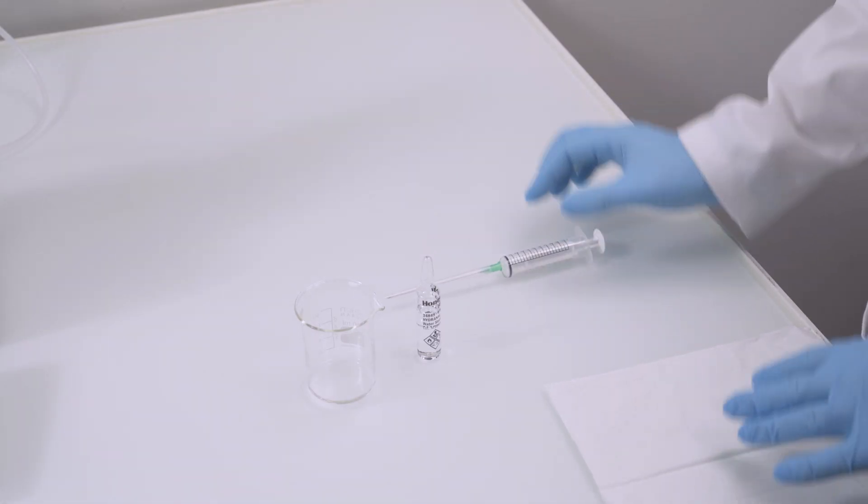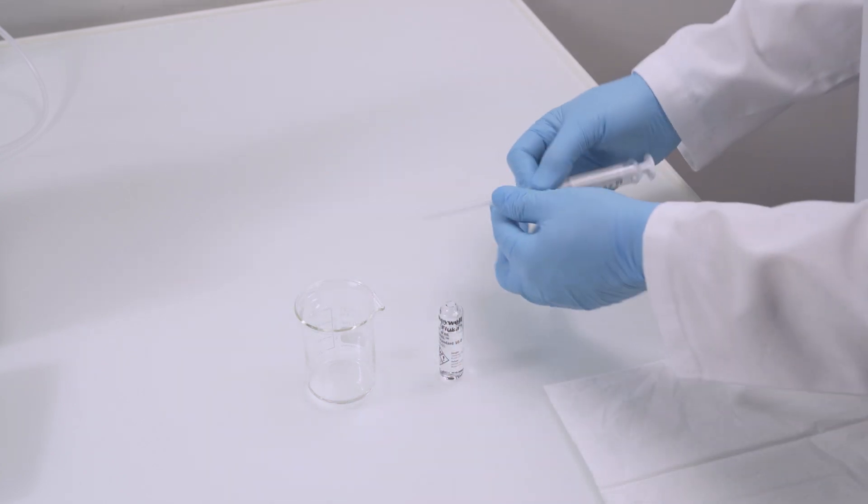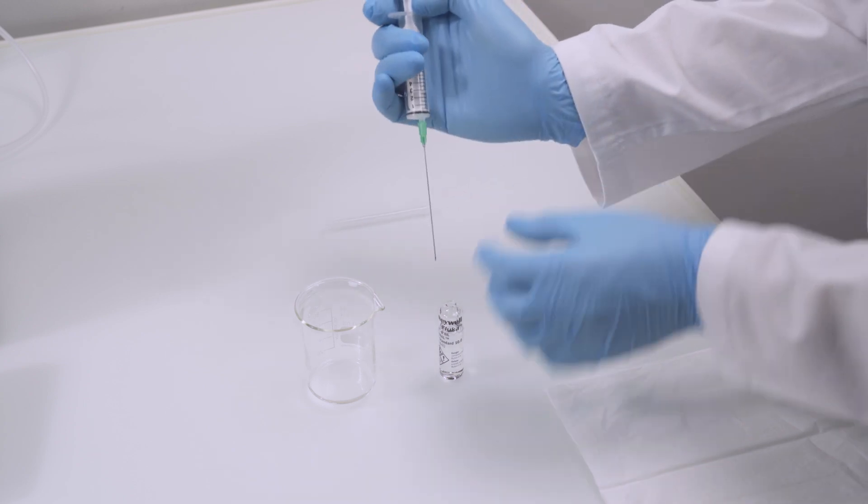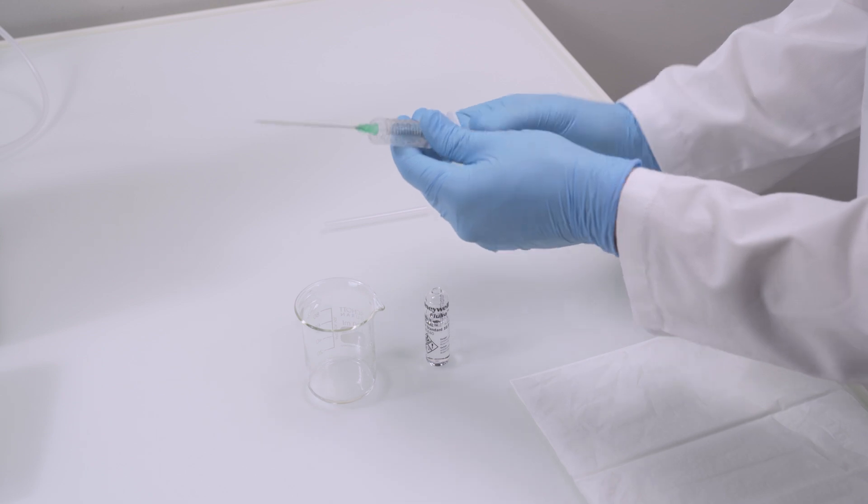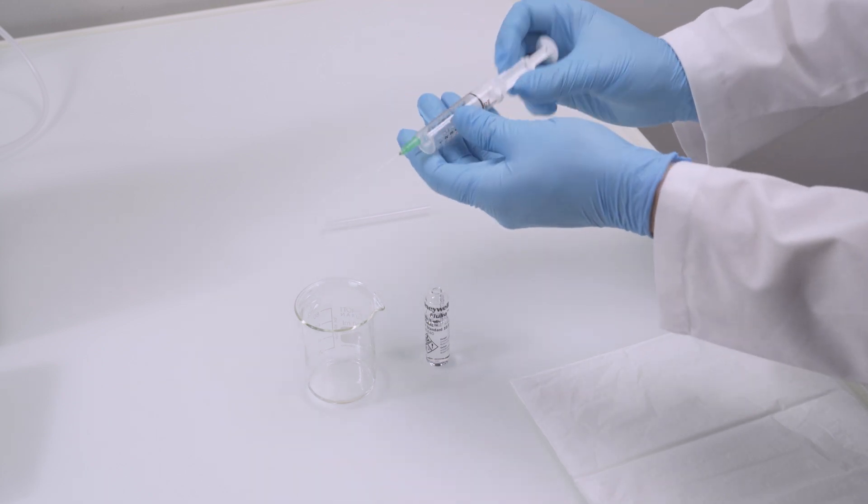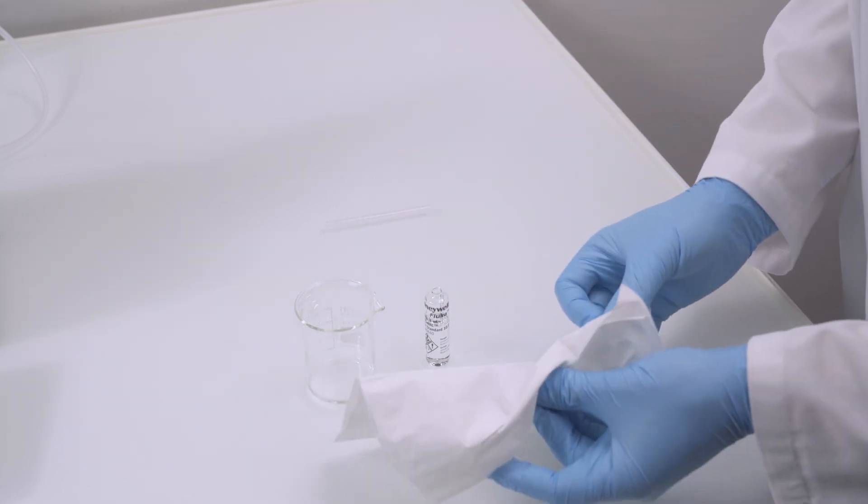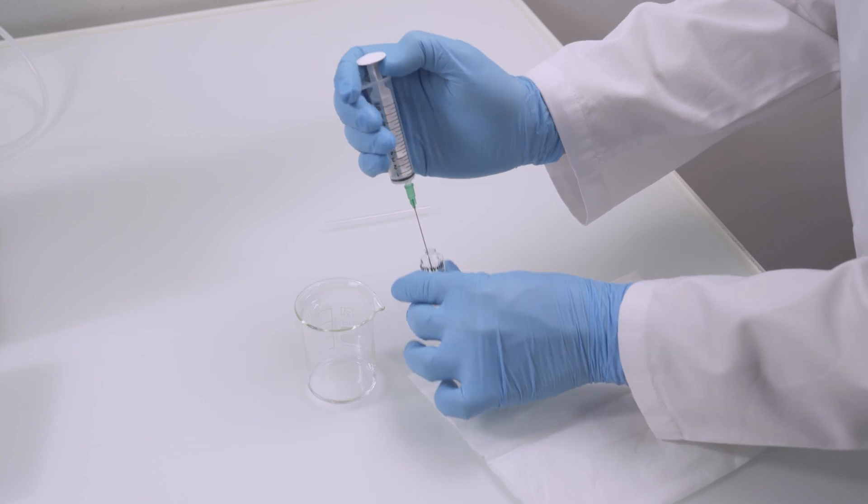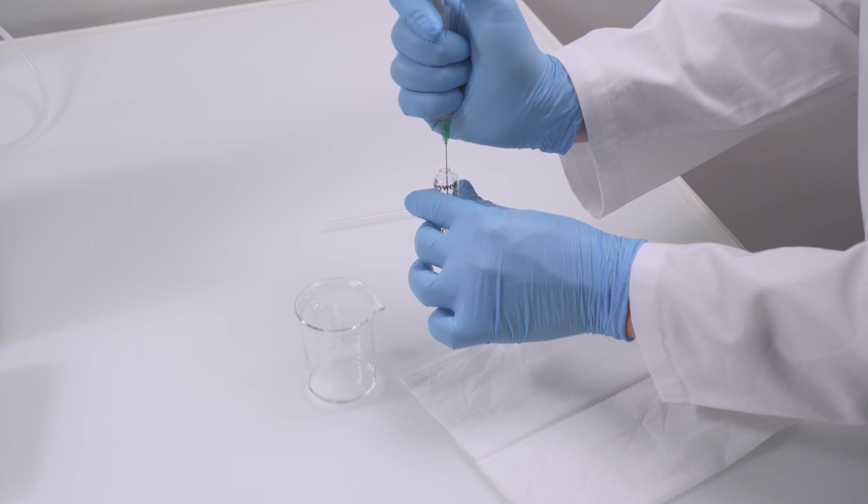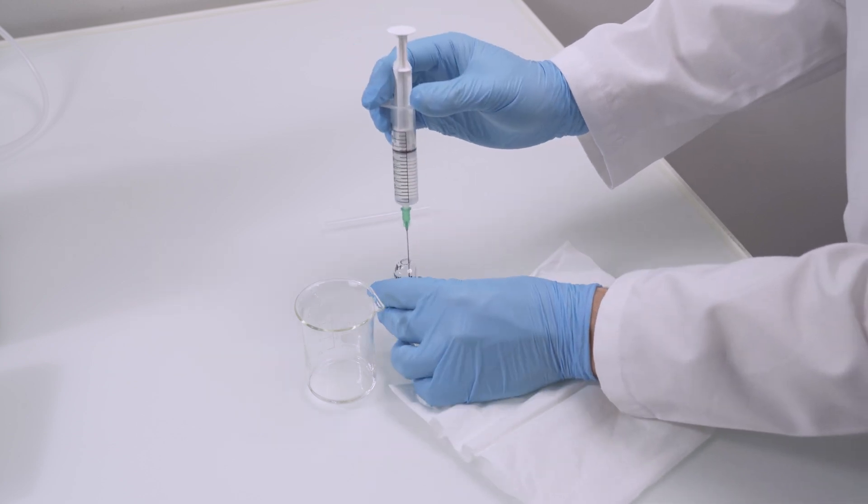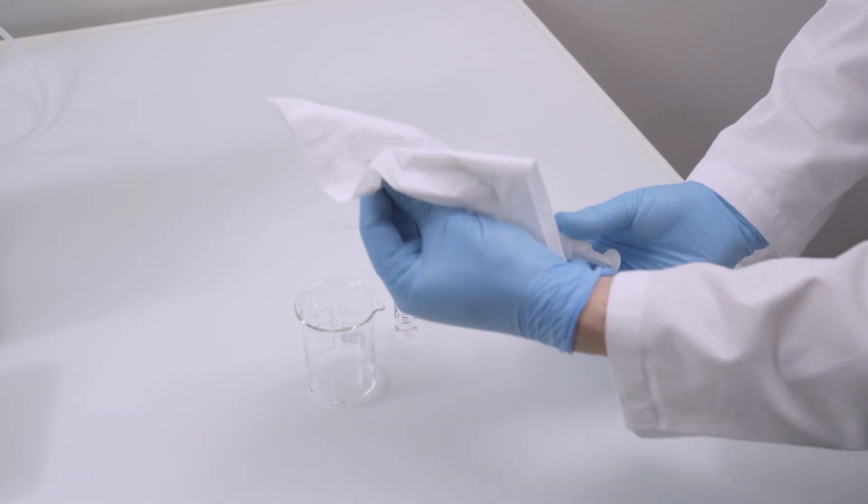To prepare the certified water standard for the concentration determination, open the ampulla and pull approximately 0.5 ml of the standard into the syringe. Wet the inside and rinse it out to remove the residual water. Then fill the whole syringe with the standard. Make sure to remove all the air from the syringe.